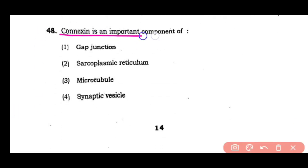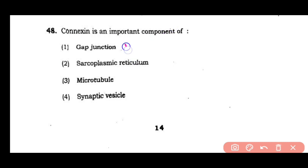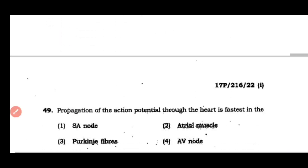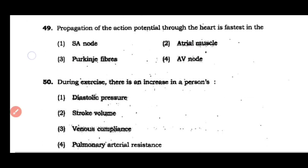Question number 48: Connexin is an important component of gap junction, sarcoplasmic reticulum, microtubule, or synaptic vesicle. The correct answer is option 1 — connexin is an important component of gap junctions.